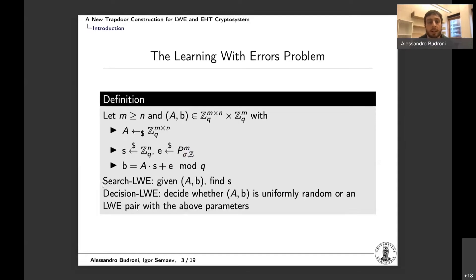This is an important research area and the learning with errors problem is one of the main computational problems in lattice based cryptography. So let's see it quickly. There are two integers M and N, and the pair A and B where A is a rectangular matrix and B is a vector that is equal to A times S plus E mod Q, where S is a random secret and E is a vector where the entries are sampled according to a certain distribution that makes it smaller with small entries. Usually the distribution we use is the discrete Gaussian distribution over integers. So the search version of the problem is: given a pair A, B find S. The decision version instead is: given a pair A, B decide whether this was sampled uniformly at random or it is actually an LWE pair with above parameters.